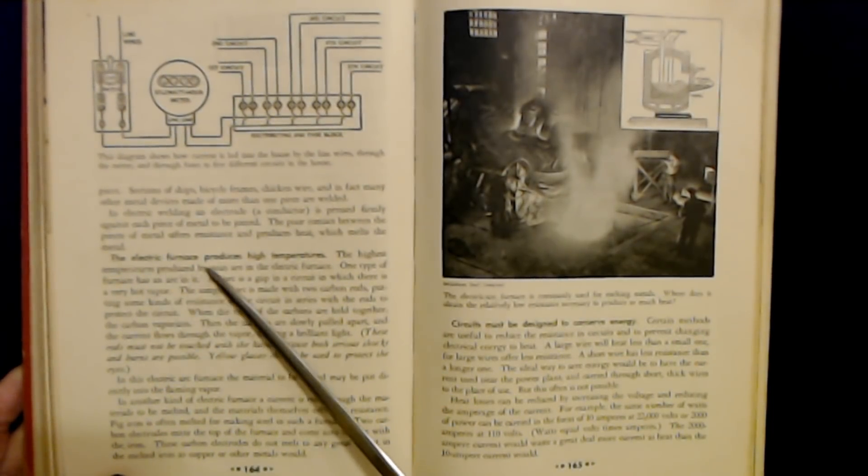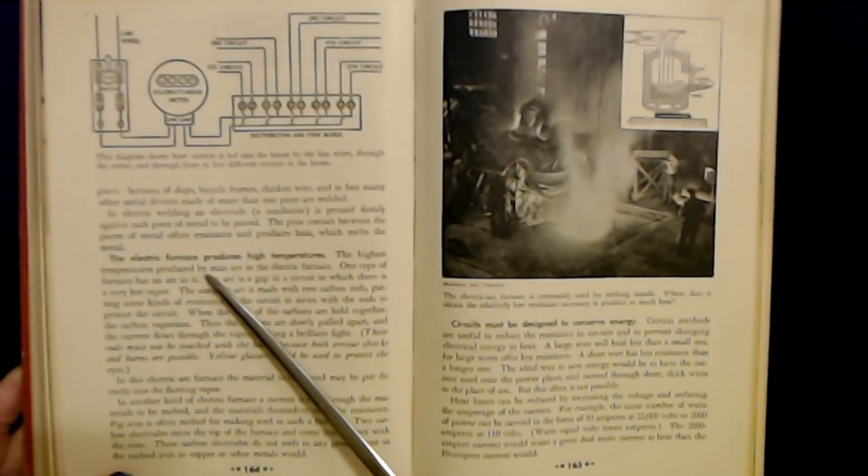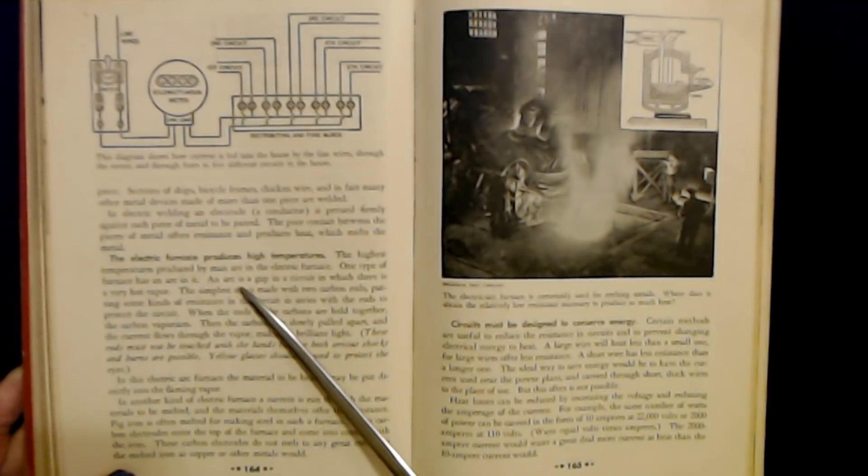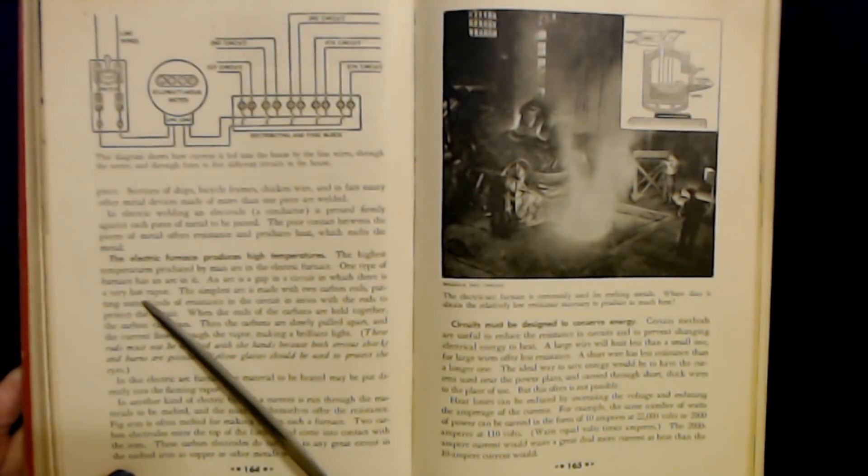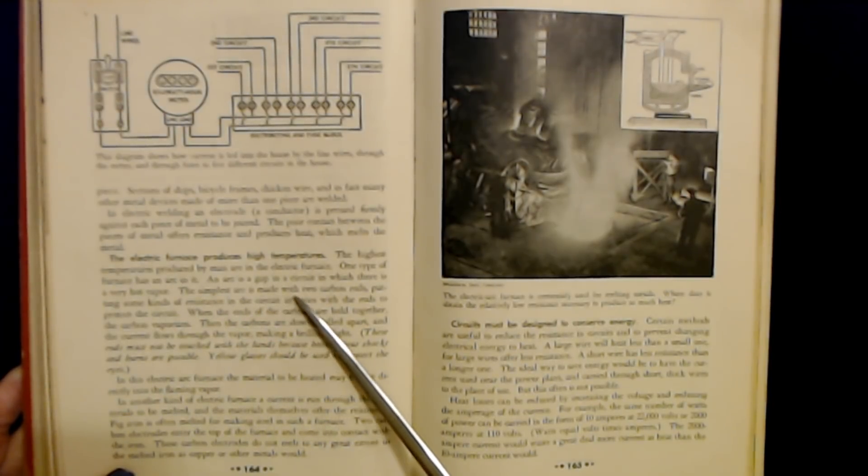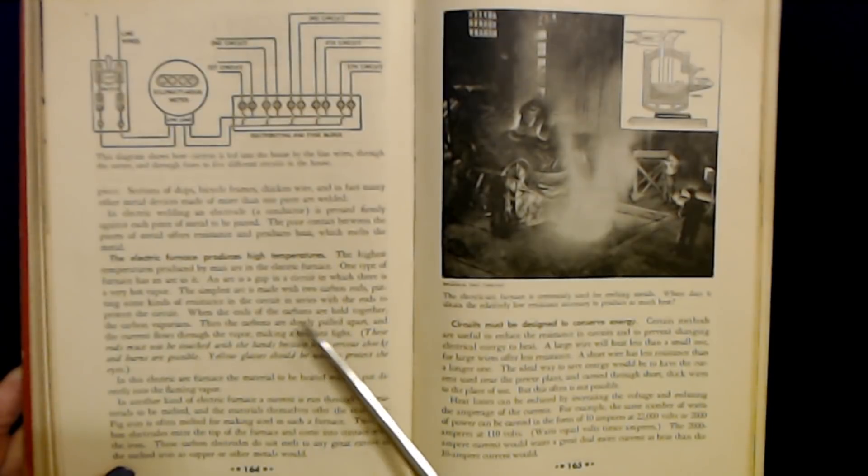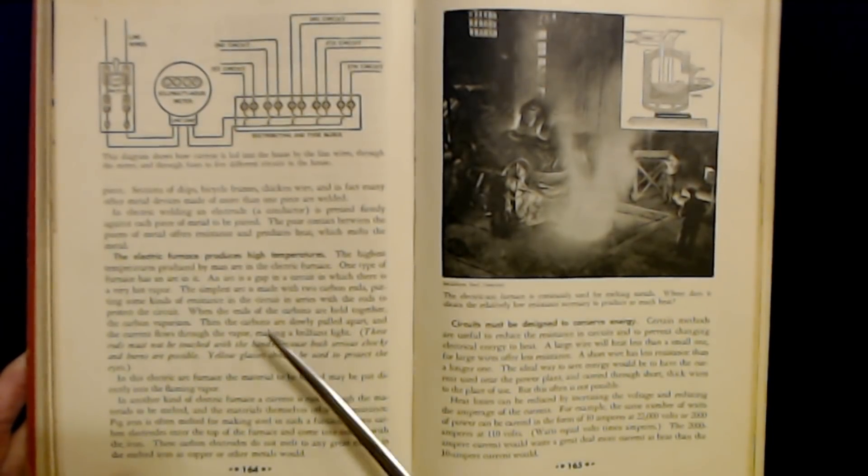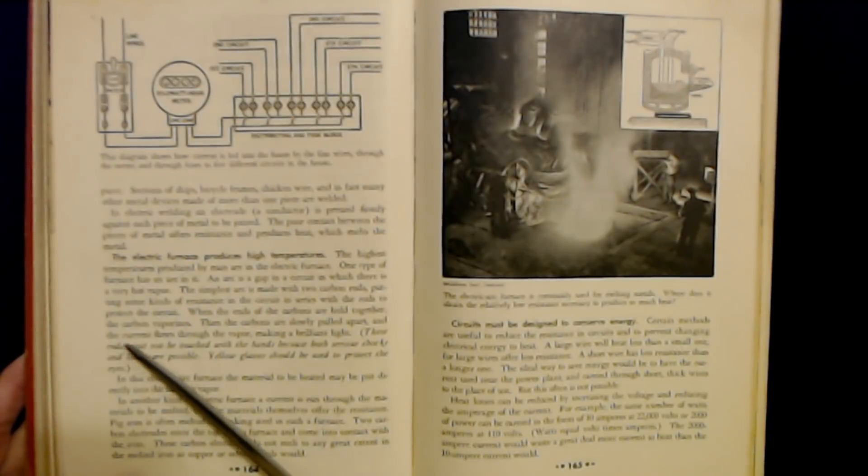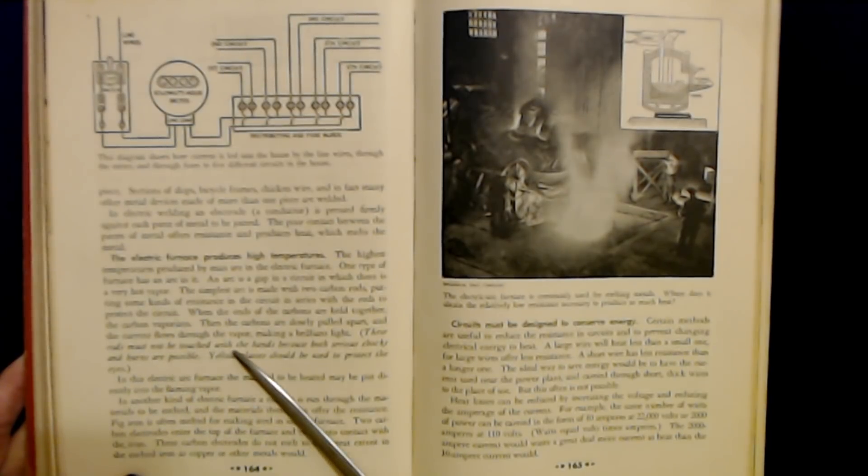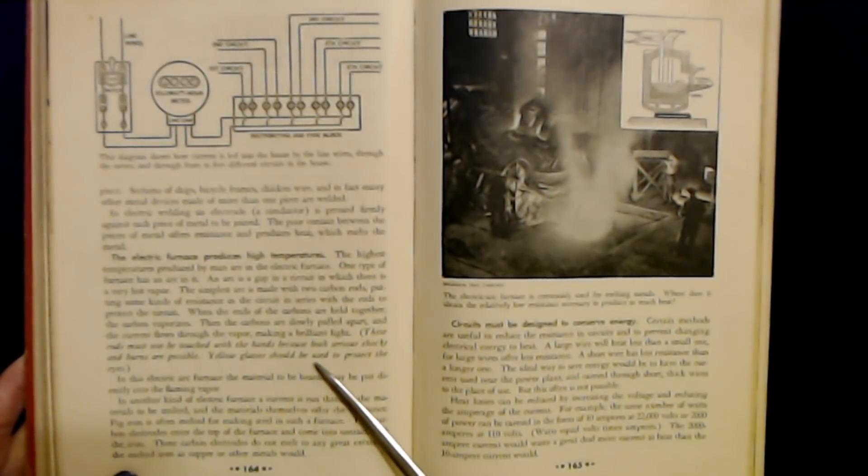The electric furnace produces high temperatures. The highest temperatures produced by man are in the electric furnace. One type of furnace has an arc in it. An arc is a gap in a circuit in which there is a very hot vapor. The simplest arc is made with two carbon rods putting some kinds of resistance in the circuit in series with the rods to protect the circuit. When the ends of the carbons are held together, the carbon vaporizes. Then the carbons are slowly pulled apart and the current flows through the vapor making a brilliant light. These rods must not be touched with the hands because both serious shocks and burns are possible. Yellow glasses should be used to protect the eyes.